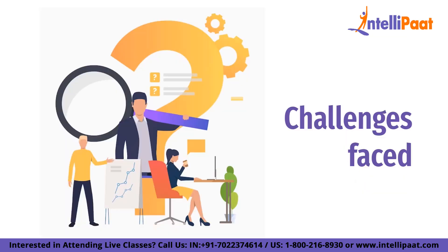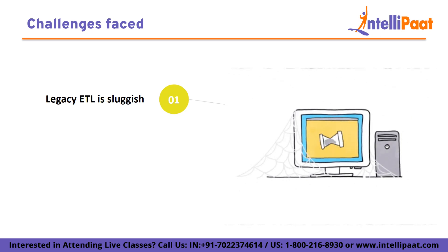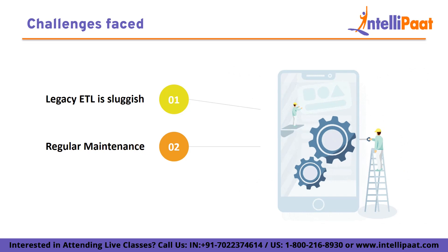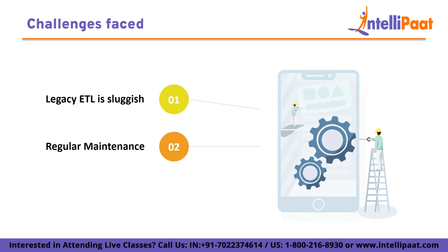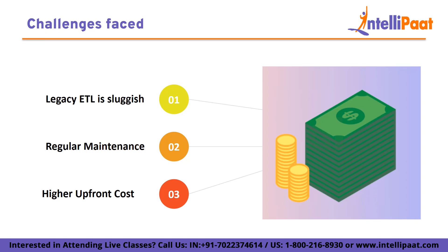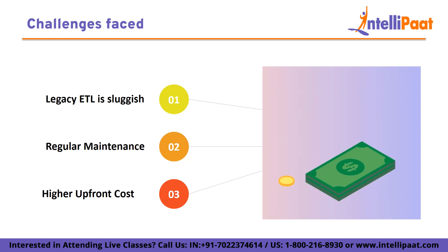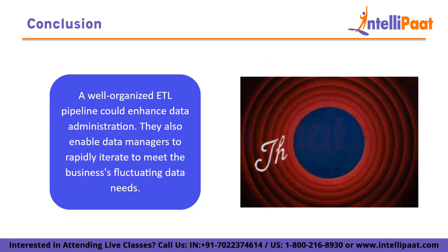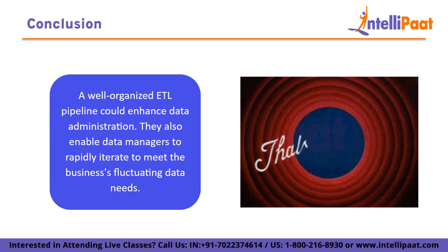Now let's look at some of the challenges or drawbacks faced. First, businesses that use ETL must manage a number of drawbacks such as legacy ETL being sluggish because it calls for disk-based staging and changes. Second is regular maintenance. ETL data pipelines are used to handle extraction and transformation; however, they must be refactored if analysts require other data types or if the source system starts to produce data in different formats or schemas. Third is higher upfront cost. By defining business logic and transformations, the scope of data integration can be increased. When data is moved from one place to another, different operators can answer a question methodically and accurately instead of searching through various data sources. A well-organized ETL pipeline could enhance data administration and enable data managers to rapidly iterate to meet the business's fluctuating data needs.